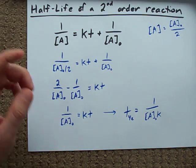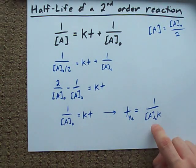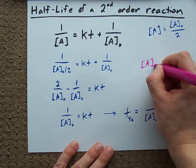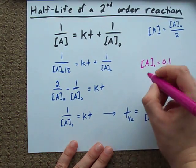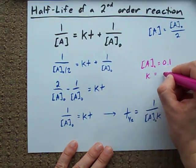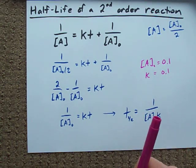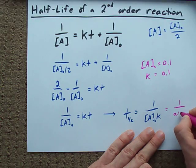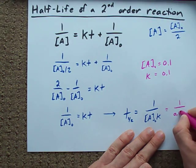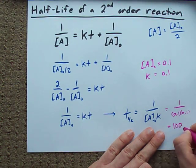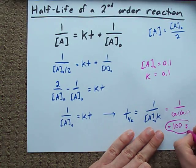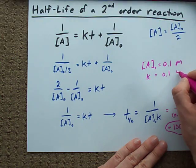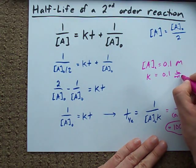So, if I told you that there's a second-order reaction and the initial concentration of the reactant was 0.1 and the K was 0.1, you could literally just plug those into this equation, solve it, and you end up with your half-life. Just like that. As long as these are in the right units of moles per liter and then liters per mole seconds.